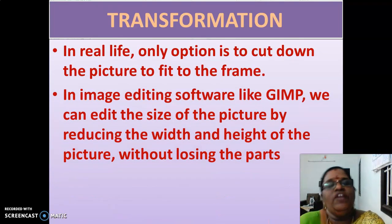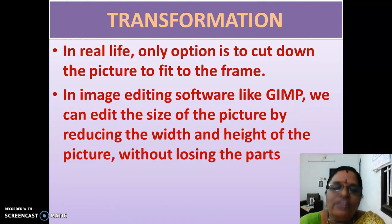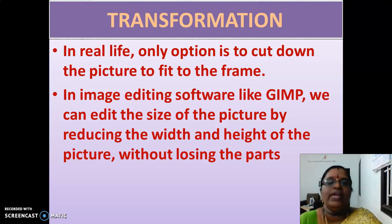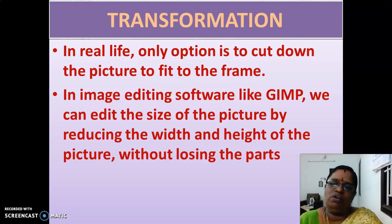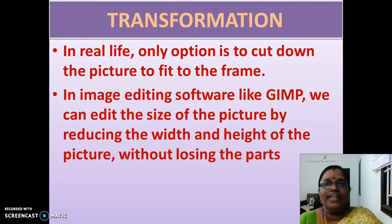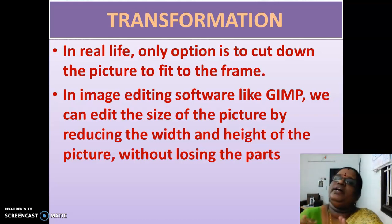But in image editing software like GIMP, we can edit the size of the picture by reducing the width and height of the picture without losing any parts of the image. But if you are cutting the picture in real life, you will be losing some parts — they will not be there in the picture. In GIMP, we can do this without cutting — that is called scaling the image. We saw scaling the image in the first lesson, and it comes under transformation.